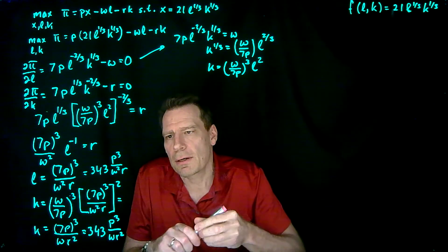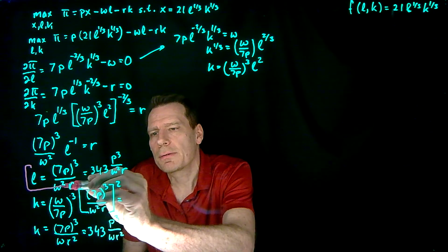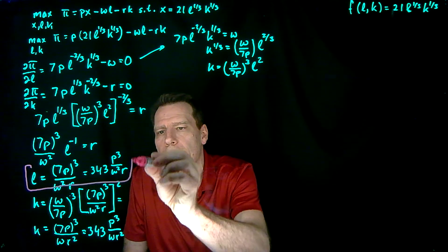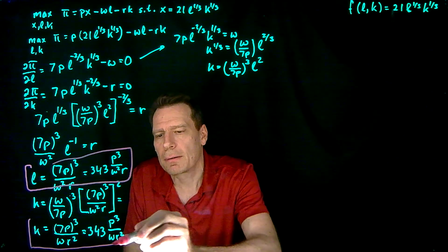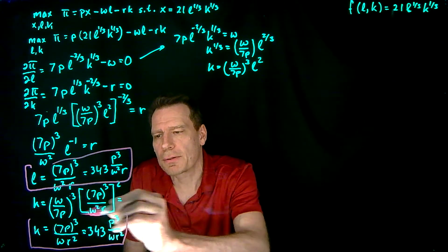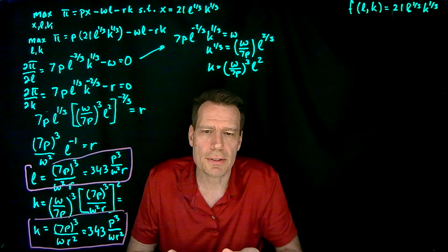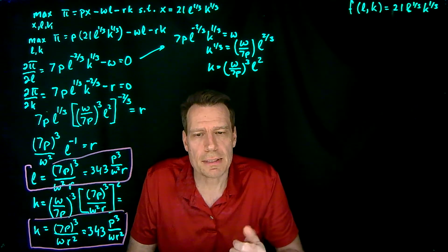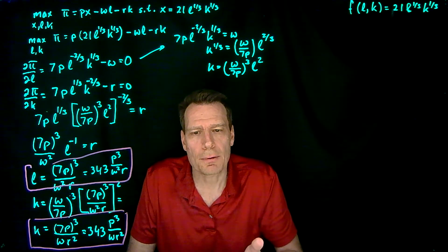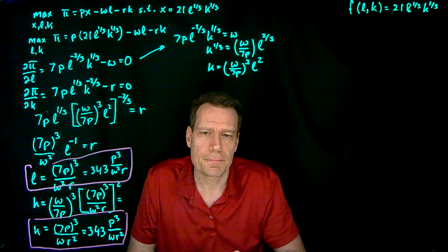So here we have our labor demand function and our capital demand function — functions that simply tell us, as a function of input and output prices, how much labor and capital we'll hire if we maximize profits.